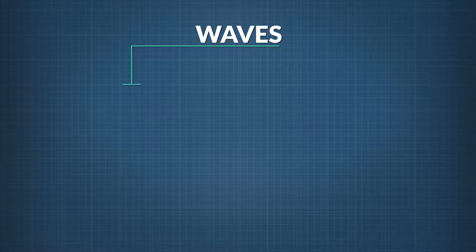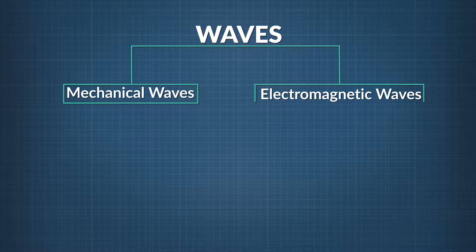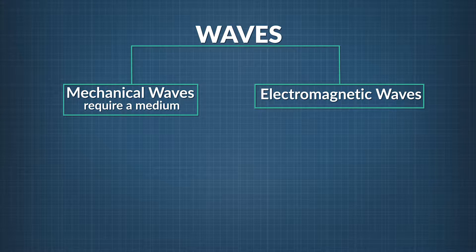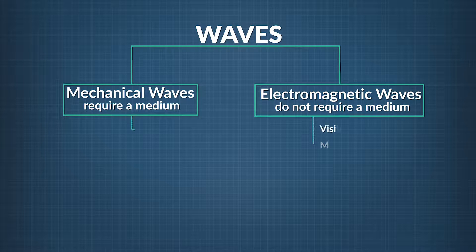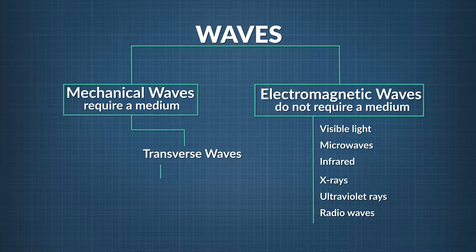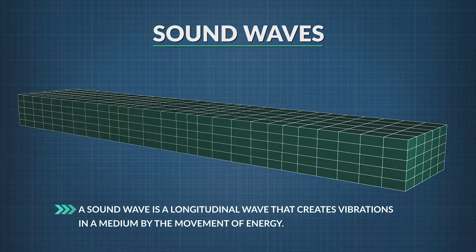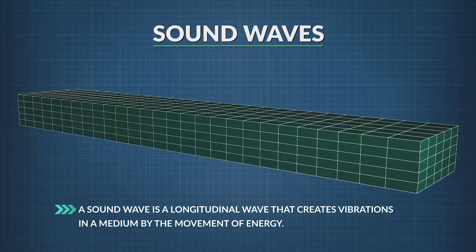Sound travels in waves. There are several types of waves: mechanical waves and electromagnetic waves. Mechanical waves must have a medium — a solid, liquid, or gas — to travel through, but electromagnetic waves do not. Both kinds of waves can be transverse, but only mechanical waves can also be longitudinal. What we call sound is a mechanical longitudinal wave that creates vibrations in a medium by the movement of energy.